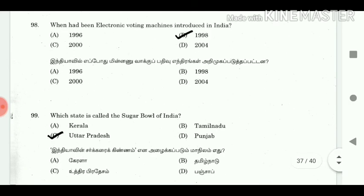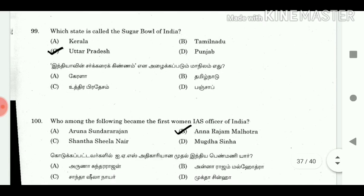98. When were electronic voting machines introduced in India? Answer: 1998. 99. Which state is called the sugar bowl of India? Answer: Uttar Pradesh.